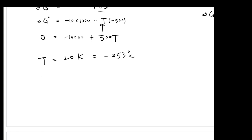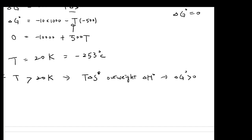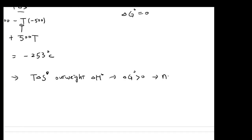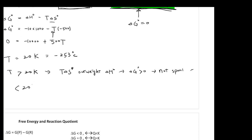If the temperature is greater than 20 K, the second term becomes dominant. Since delta S knot is negative, negative T times delta S knot becomes positive and outweighs delta H knot, making delta G knot positive — the reaction is not spontaneous. On the other hand, if T is less than 20 K, delta H knot dominates, delta G knot becomes negative, and the reaction is spontaneous.